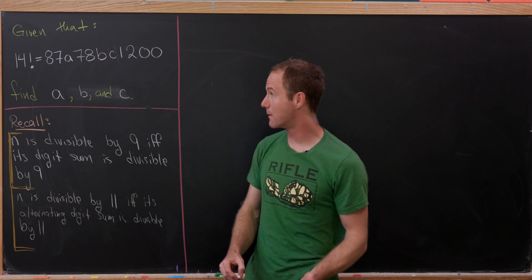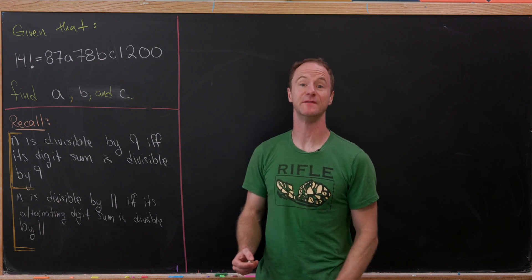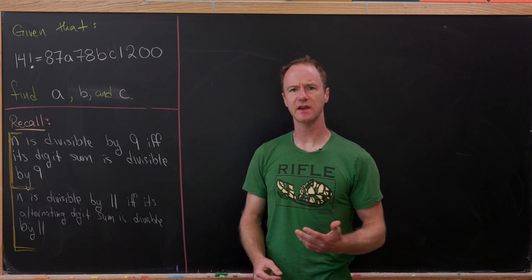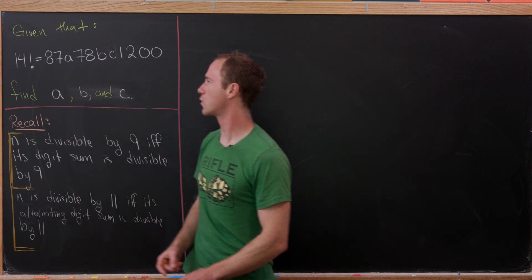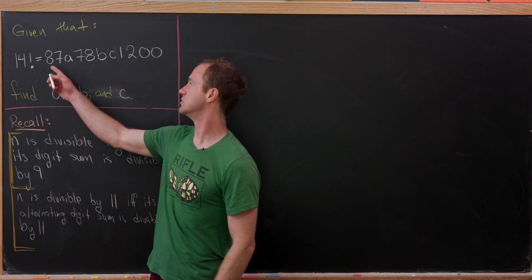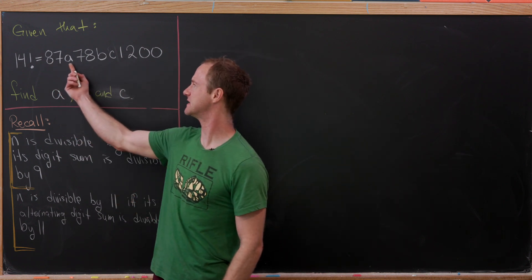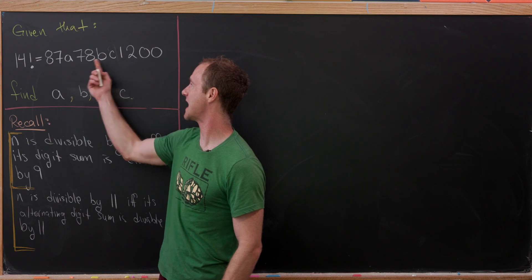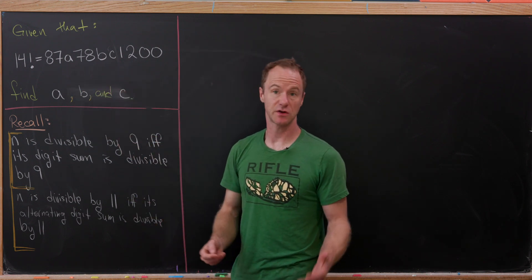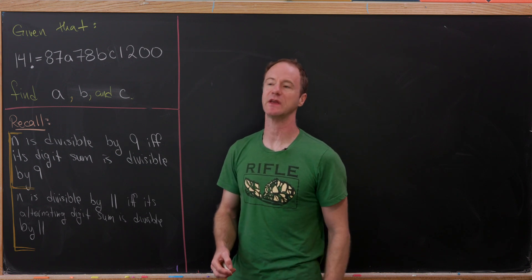We're going to look at a pretty interesting number puzzle involving a lot of divisibility tricks. In particular, suppose that we're given that 14 factorial is equal to this number where we're missing the digits A, B, and C. Can we determine those digits? We'll see that we can.